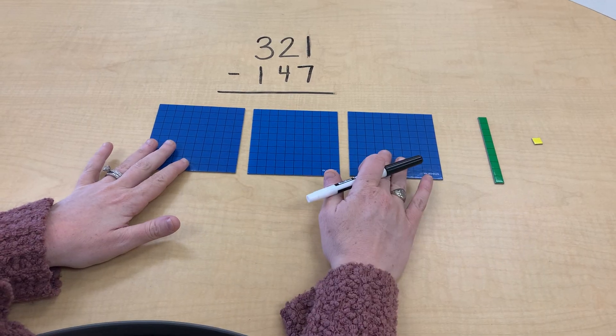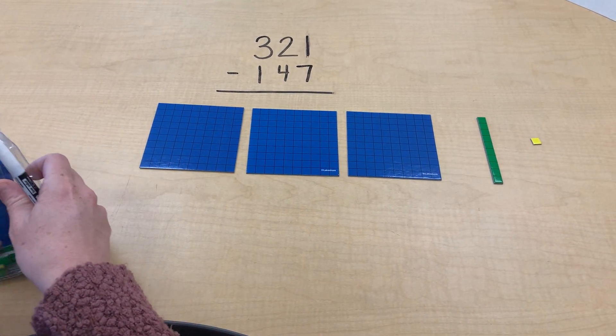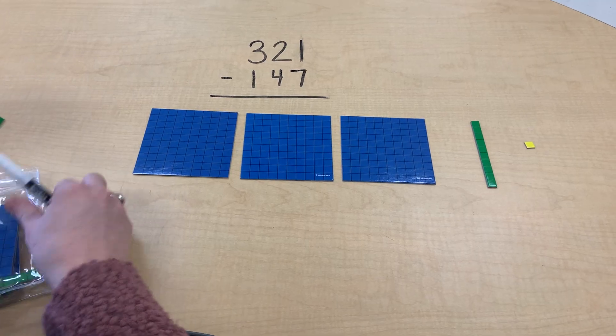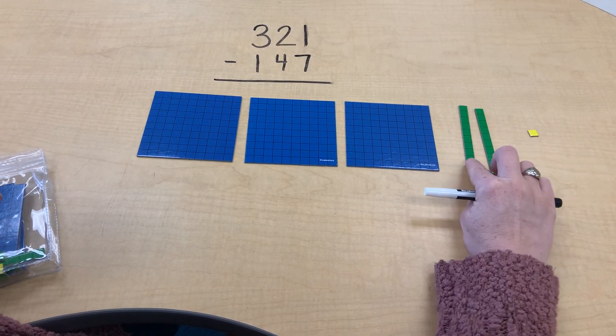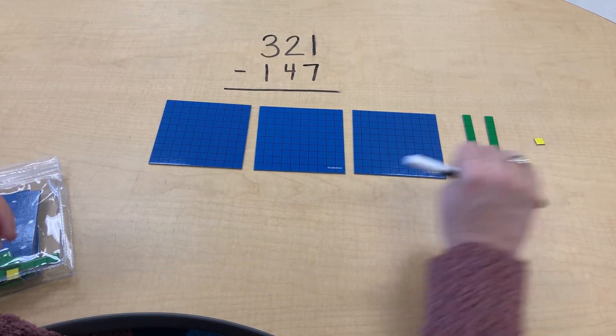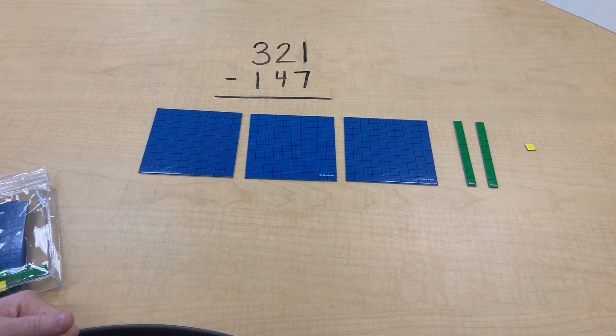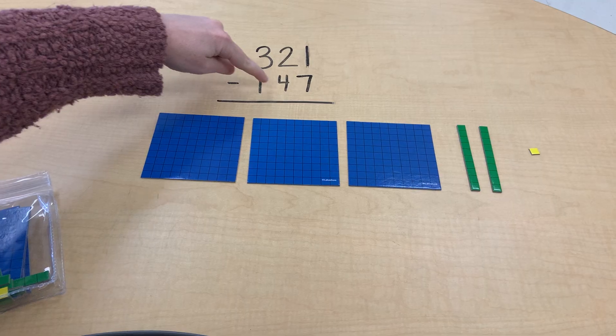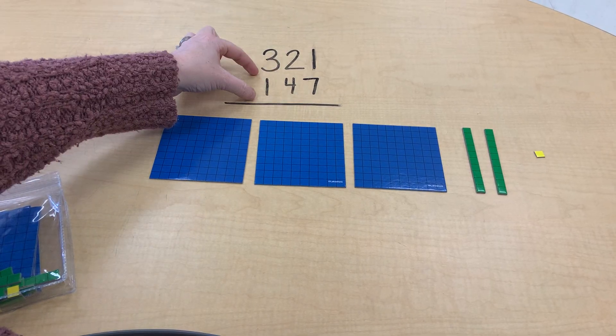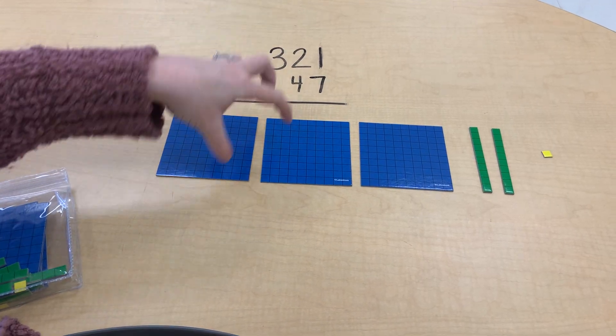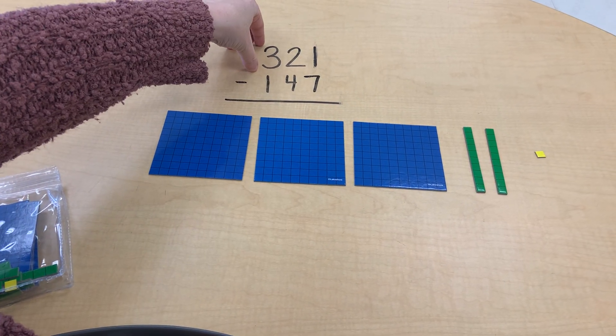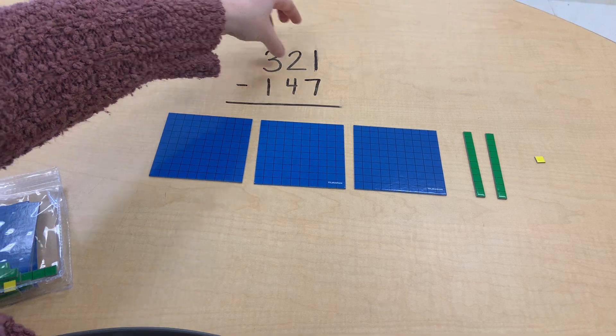The first thing that we're going to do is compose the number 321 using our base 10 blocks. So we have three hundreds, we need two tens, I had one sitting there, two tens and one one. So right here we have the number 321. We are taking away 147. This number is smaller than 321, so we know that this number is already built inside of 321.